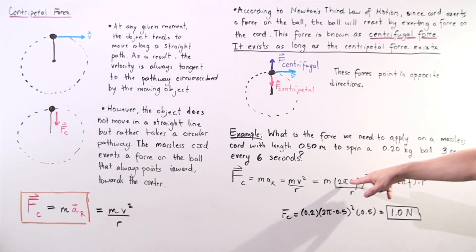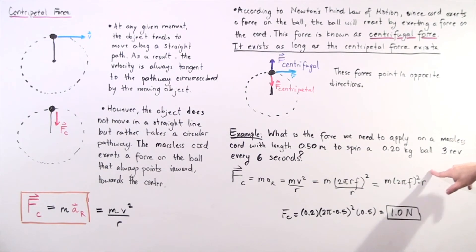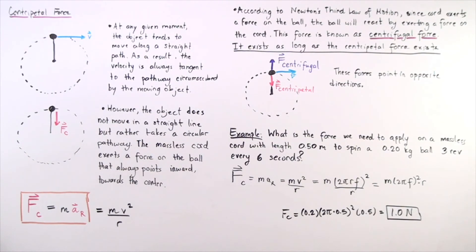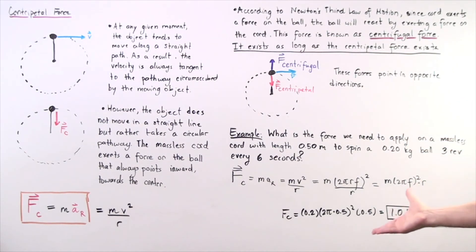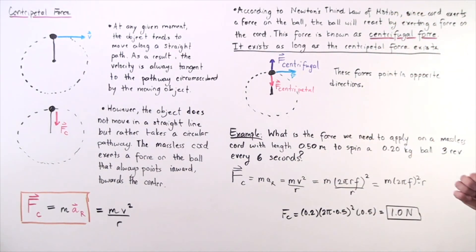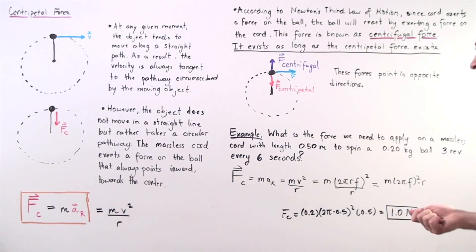Substituting into the formula — mass times 2 times pi times R times frequency squared divided by R — the R cancels, leaving us with mass times 4 pi squared times R times frequency squared. Plugging in our values: mass is 0.2 kilograms, frequency is 0.5 revolutions per second, and R is 0.5 meters. We find that we need to apply approximately 1 newton of force on our massless rope for the object to spin along the described circular pathway.